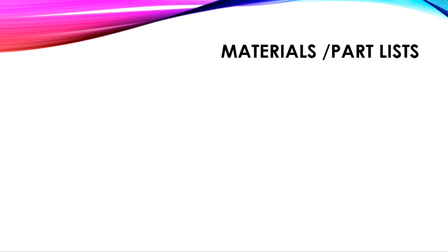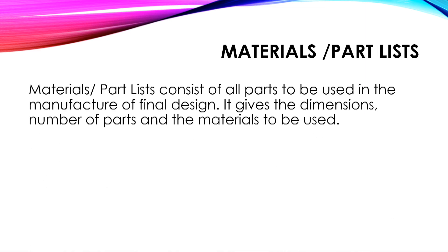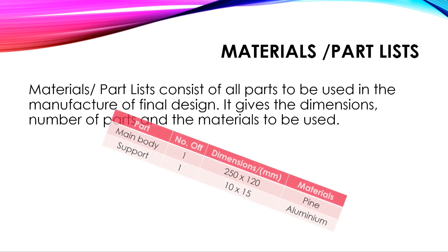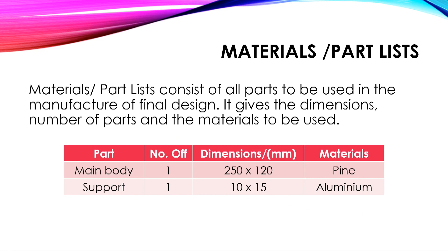Materials and part lists consist of all parts to be used in the manufacture of the final design. It gives the dimensions, number of parts and the materials to be used. An example is shown for the presentation of this information. For example: part, main body or support, number of (also known as quantity), dimension — it should be in millimeters — and materials.